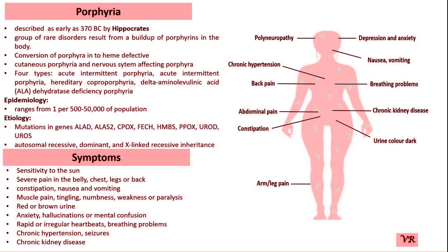Porphyria is a group of rare metabolic disorders caused by defects in the heme biosynthesis pathway, leading to the accumulation of porphyrins or their precursors. It can present with a range of symptoms including abdominal pain, neurological disturbances, and skin sensitivity due to sunlight. The prevalence of porphyria is 1 in 25,000 to 50,000 individuals worldwide.